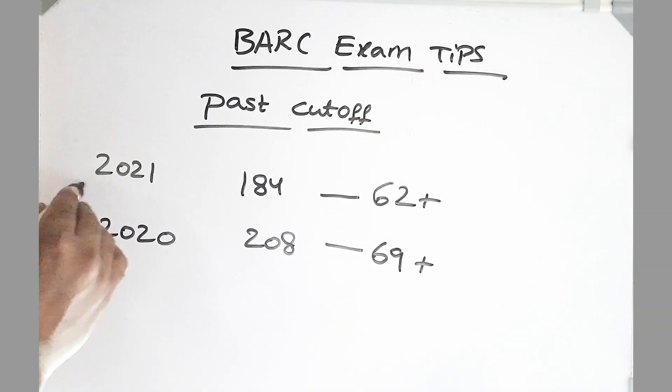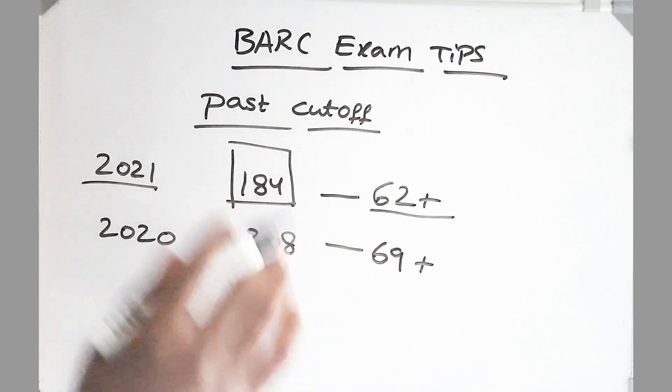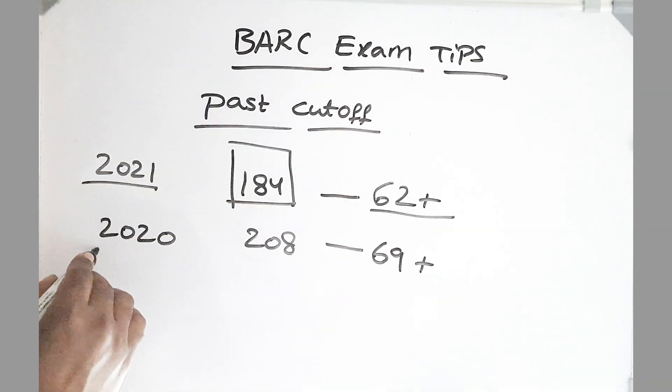Friends, let's look at past cutoffs. In 2021, examination cutoff is 184 marks. To get more than that, you have to score 62 questions perfectly. And for 2020, if you see, it is even higher.